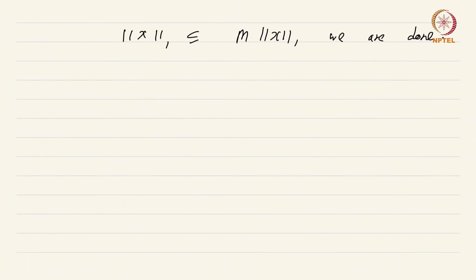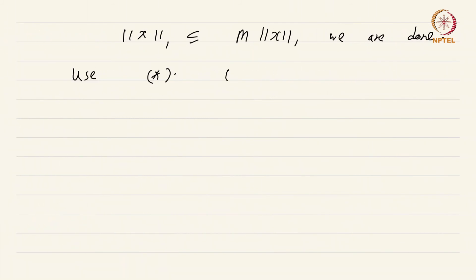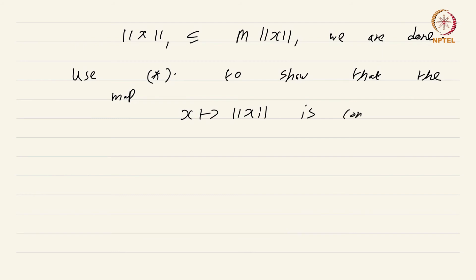Use (★) to show that the map x ↦ ‖x‖ is continuous on the space (X, ‖·‖₁). What you do is put the metric coming from ‖·‖₁ on X, put the usual Euclidean metric on ℝ, and then the map x ↦ ‖x‖ is actually continuous.